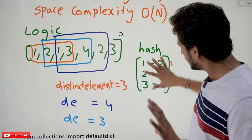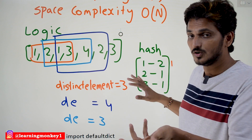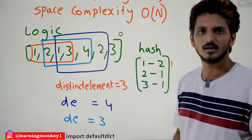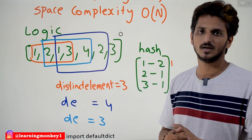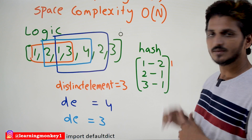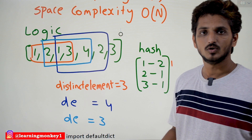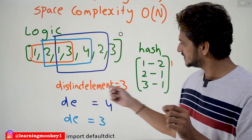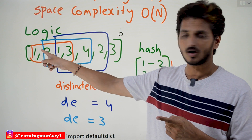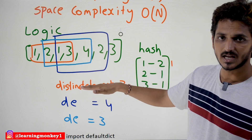This is the hash table for the previous window. From the previous window, we eliminated one number — which is 1. So we need some changes in the hash table. 1 existed 2 times; we eliminated 1 occurrence, so it becomes 1 time. Is it required to change the distinct element count? No, because this is a duplicate element that already existed. That is why we are not changing the distinct element count.